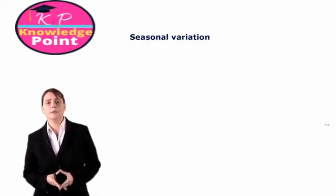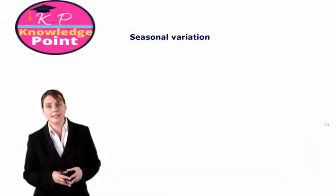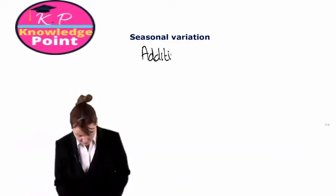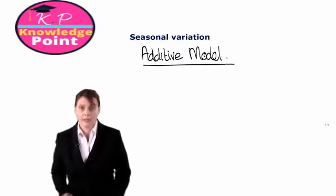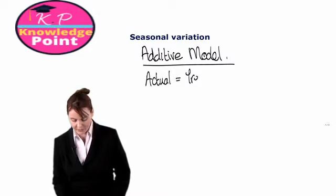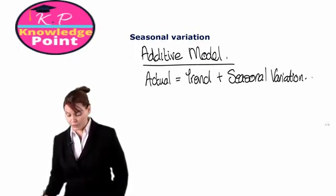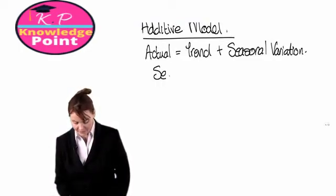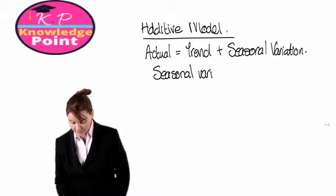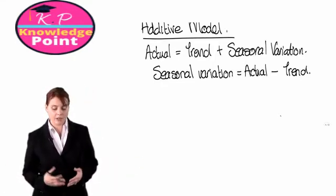Now that we know how to calculate our trend line, we need to look at calculating our seasonal variation. There are two different models for calculating the seasonal variation. The first is the additive model. If we're applying the additive model, we assume that our actual sales for a particular time period will be equal to our trend plus the seasonal variation. We can rearrange this so that seasonal variation equals actuals minus trend.